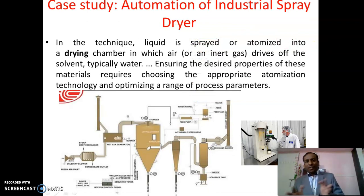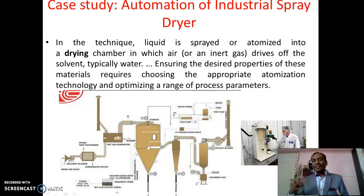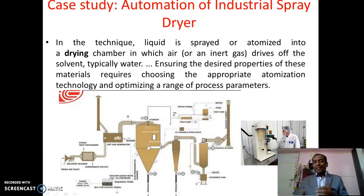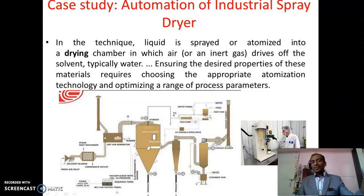One case study is automation in the spray dryer, which is used to dry products to obtain porous substances, increase solubility, and improve drug stability. In this technique, liquid is sprayed or atomized in a drying chamber where air or inert gas drives off the solvent — typically water. Choosing appropriate atomization technology and optimizing process parameters allows you to set parameters according to your need. Fully automatic spray dryers are now available where you only set inlet temperature, outlet temperature, and flow rate, and the AI software manages the entire process.